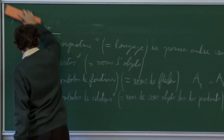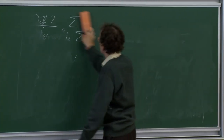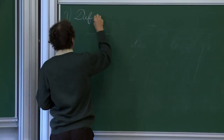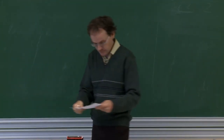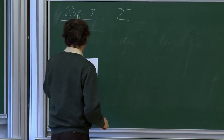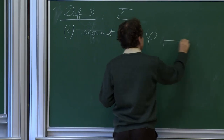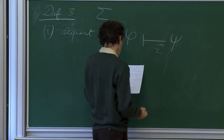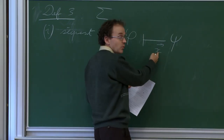We can now introduce the notion of theory — we are still in the syntax. Definition 3: we are in the context of a first-order signature. What we call a sequent is an implication between two first-order formulas in a certain context, noted as phi implies psi in the context of a finite number of variables x — where phi and psi are first-order formulas.